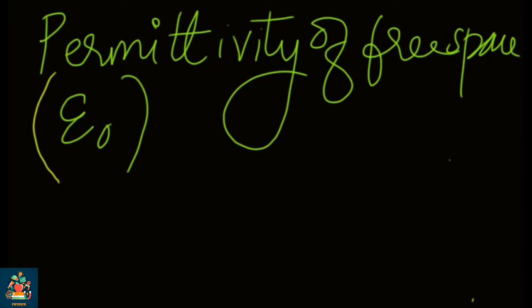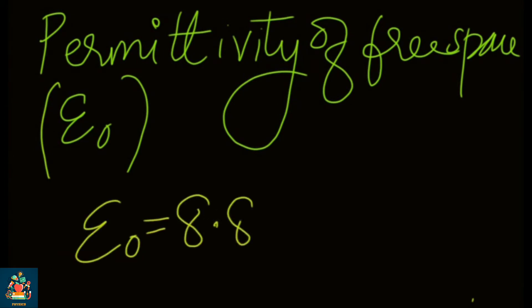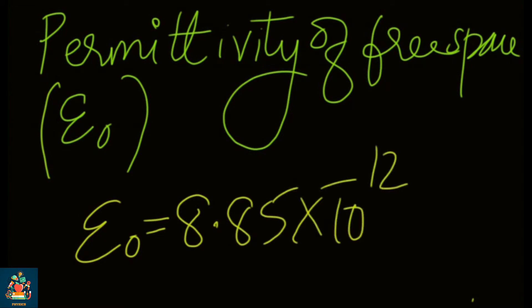Free space has no material and no influence available, so it is considered as relative permittivity equal to 1 — meaning the space is quite free. Since no material is present, the permittivity of free space will always be a constant, whereas the permittivity of different materials will be different. So epsilon zero is equal to 8.85 into 10 raise to minus 12.